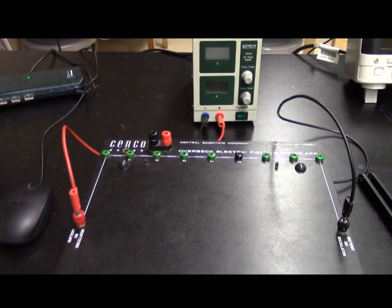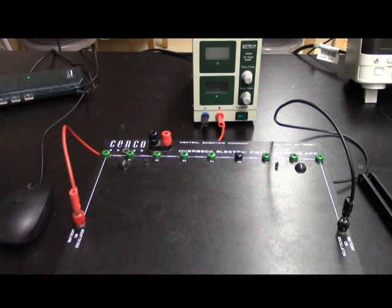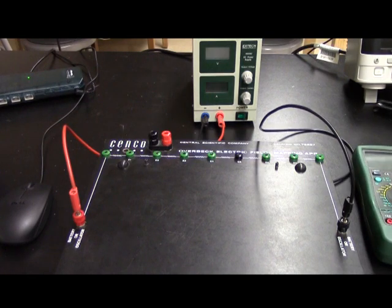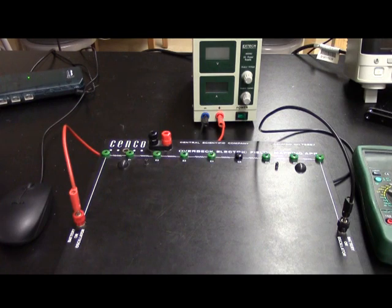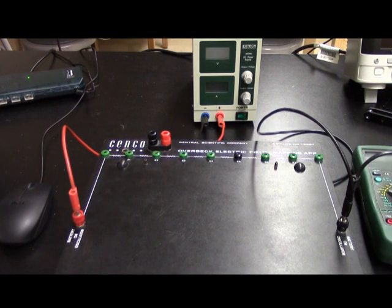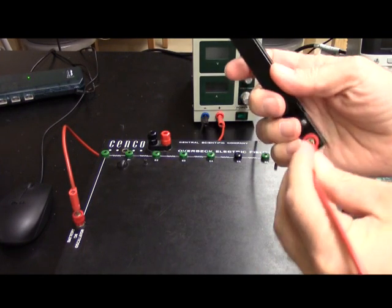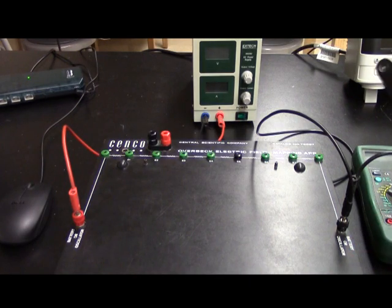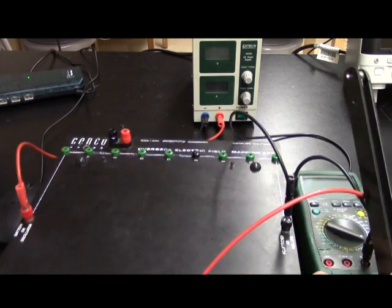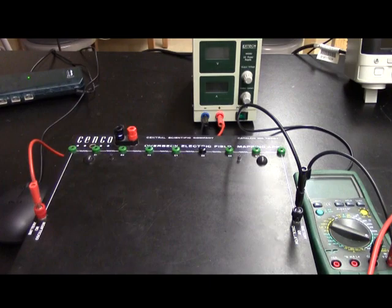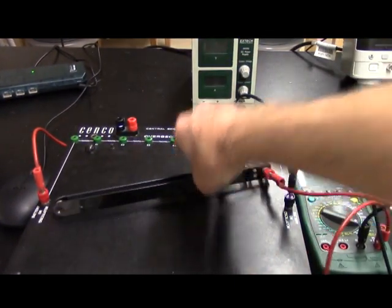We need our multimeter. We're going to turn that to voltage, let's go down to 20 volts. The negative lead goes to the ground. We're going to need one more banana connector that is going to go to the probe. Now we've got everything hooked up.